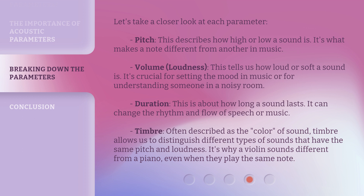Timbre, often described as the color of sound, allows us to distinguish different types of sounds that have the same pitch and loudness. It's why a violin sounds different from a piano, even when they play the same note.